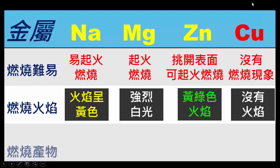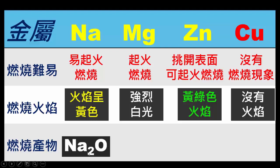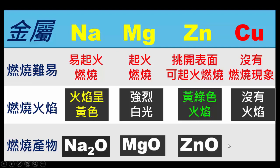这四种金属的燃烧产物都是氧化物。钠的燃烧产物是氧化钠，化学式是 Na₂O，是白色的固体。镁的燃烧产物氧化镁，化学式是 MgO，也是白色的固体。锌的氧化产物是氧化锌，ZnO，也是白色的固体，很多的药膏都有氧化锌成分哦。最后铜虽然没有燃烧的现象，但是表面也会产生暗黑色或者是深红色的氧化物，而让铜片失去原有的光泽。